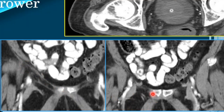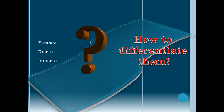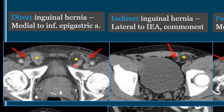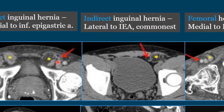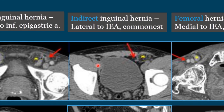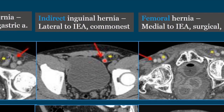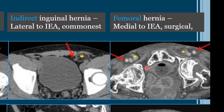The question is how to differentiate the three types of hernias: femoral hernia, direct inguinal hernia, and indirect inguinal hernia. The first criterion is the relation with the inferior epigastric arteries. If the inferior epigastric arteries are lateral to the hernia, it is a direct inguinal hernia. If they are medial to the hernia, it is an indirect inguinal hernia. In femoral hernia, the inferior epigastric arteries are also seen lateral to it.